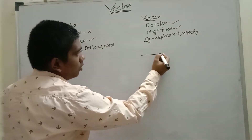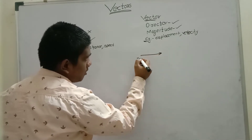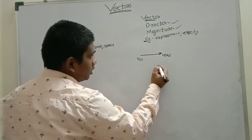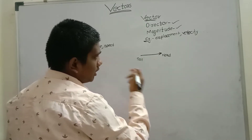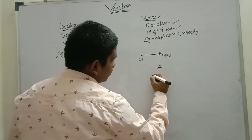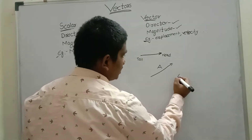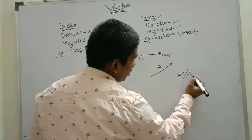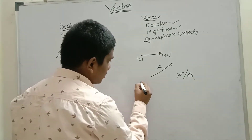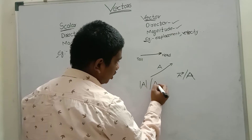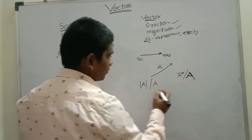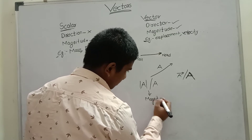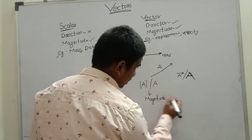A vector is denoted with an arrow. This end is called the tail and this end is called the head. A vector A can be represented as bold A or A with an arrow on top. Whereas if you write modulus of A, or simply A without bold, that shows only the magnitude of the vector, not the total vector.